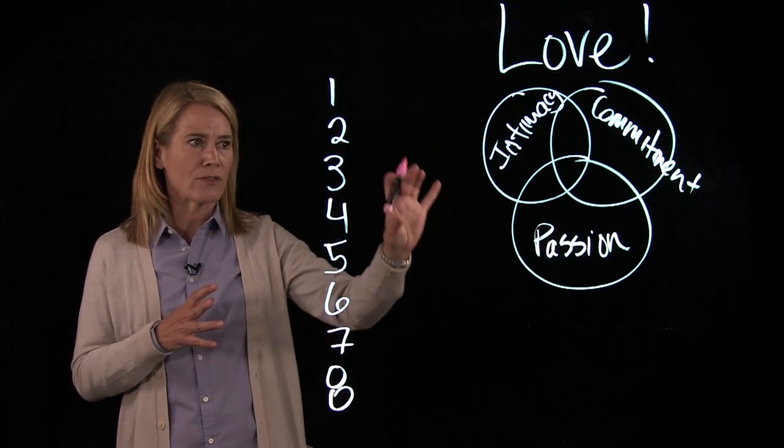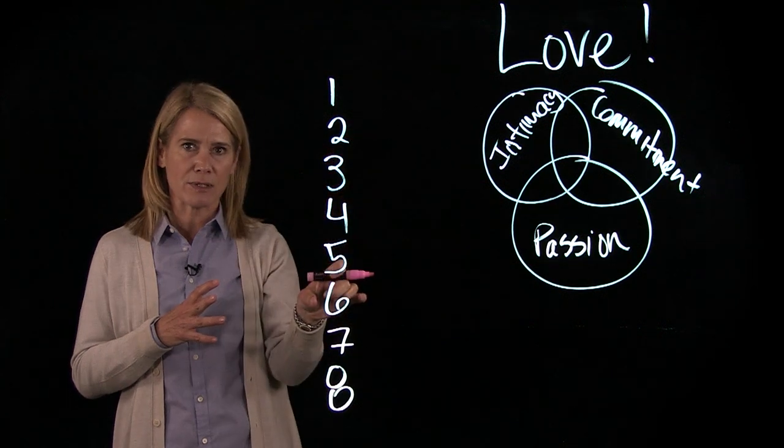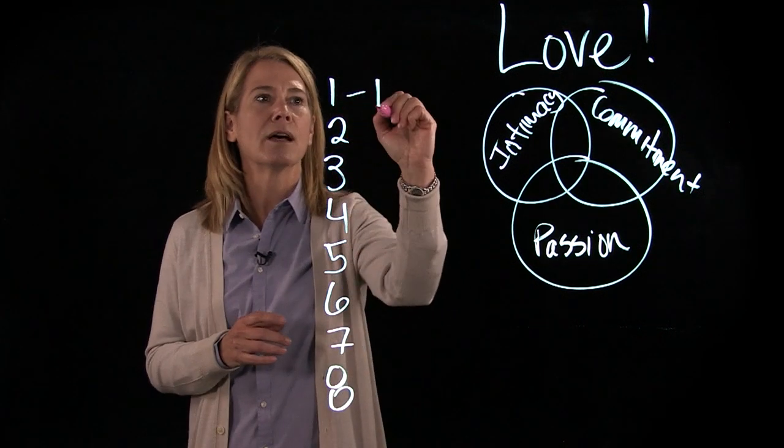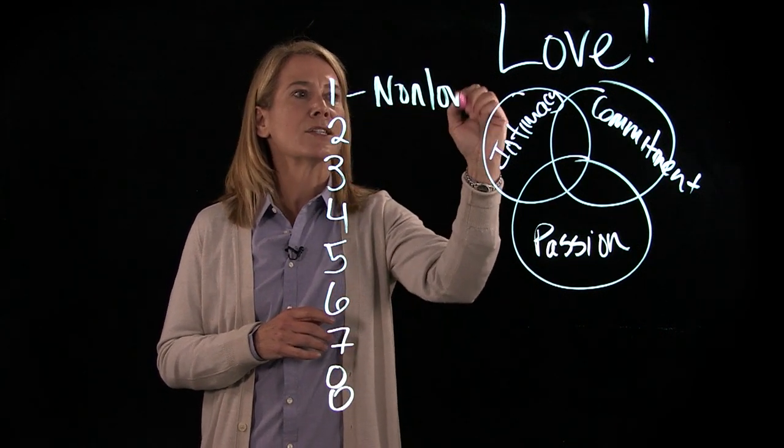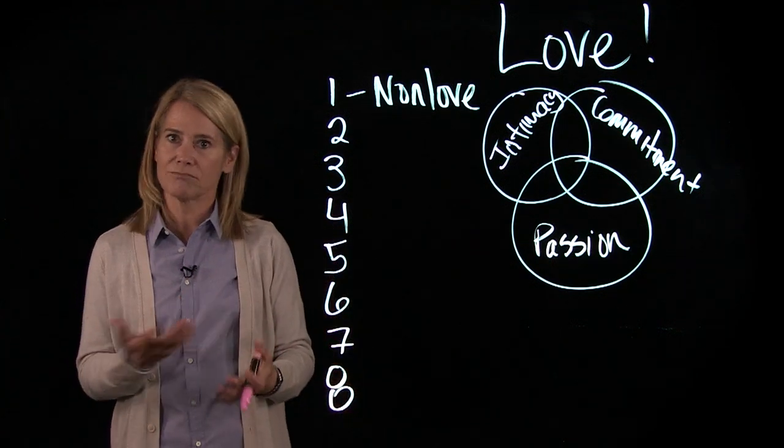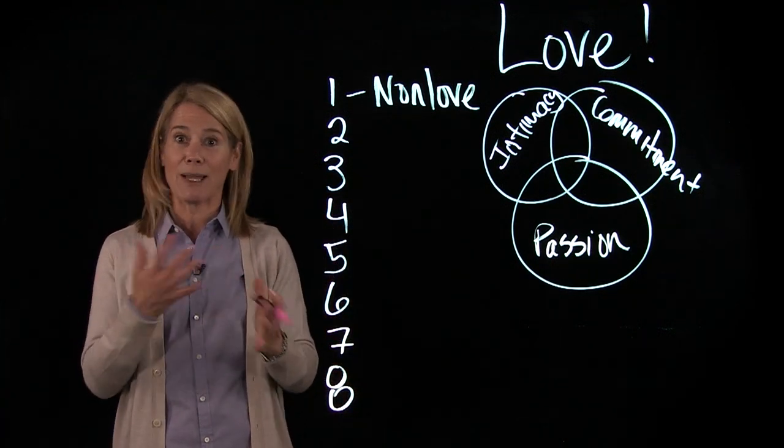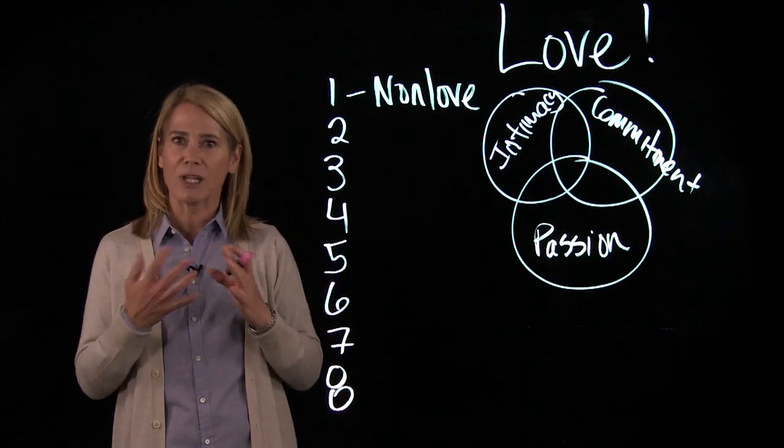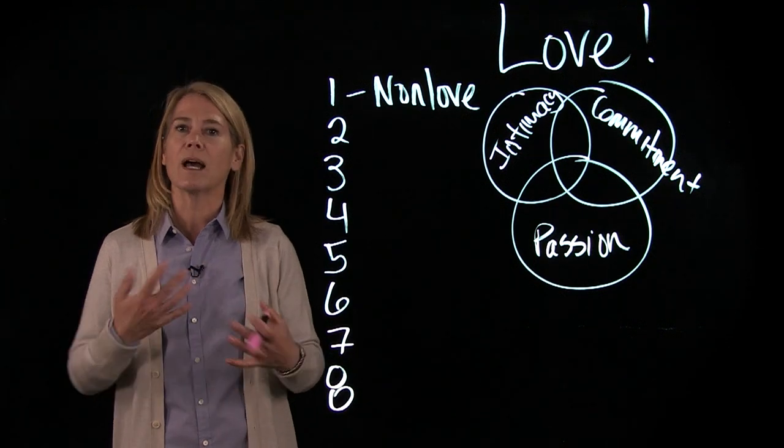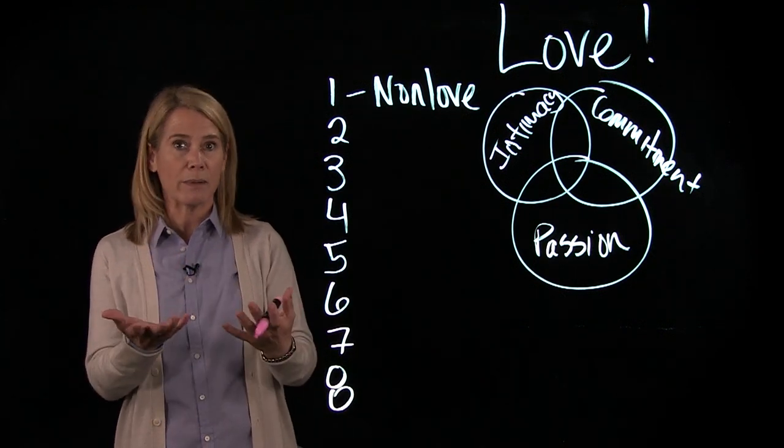And by the intersection of those circles you can get eight different types of love. So the first type is non-love, and non-love is what you would have for me as your instructor. I don't love you, you don't love me. That would be creepy, right? So there's no love between us.